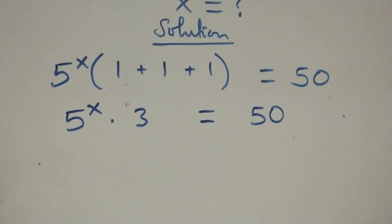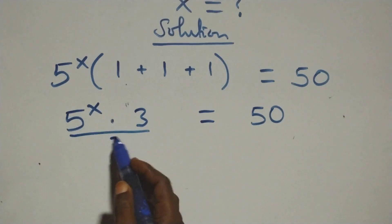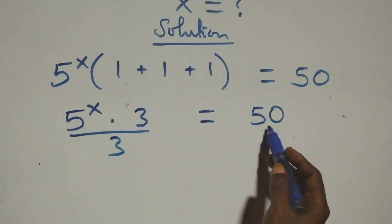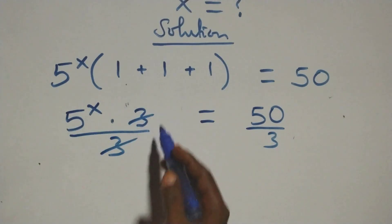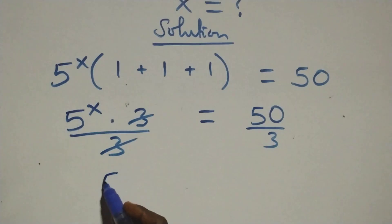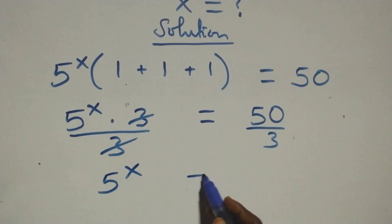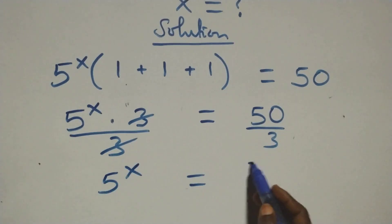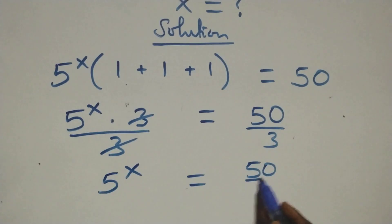The next step here: divide both sides by 3. The 3s cancel each other, giving us 5 raised to power x equals 50 over 3.